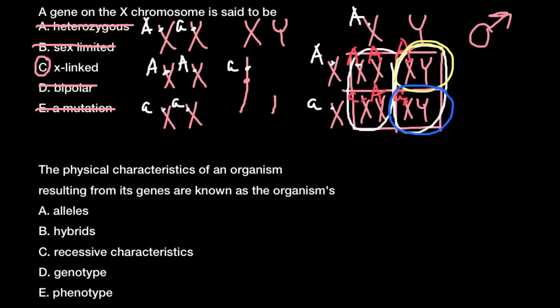Now we move to the second question: the physical characteristics of an organism resulting from its genes are known as the organism's — and here are five answers to choose from. Answer A: alleles. Alleles are just different versions of the same gene — even one small mutation in a gene means it is a new variant, and we call such a variant an allele. So we can cross out this answer.